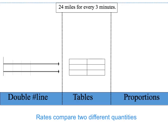Let's refer to the example at the top of this slide. It says 24 miles for every three minutes. We know that's a rate because we're comparing two different quantities — miles is one quantity and minutes are another. We can write it as 24 miles per every three minutes in fraction form, or as 24 colon 3, or 24 to 3. Those are different ways to write that rate.